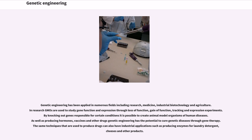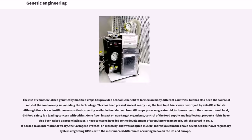The same techniques used to produce drugs can also have industrial applications such as producing enzymes for laundry detergent, cheeses, and other products. The rise of commercialized genetically modified crops has provided economic benefit to farmers in many different countries, but has also been the source of most of the controversy surrounding the technology. This has been present since its early use; the first field trials were destroyed by anti-GM activists. Although there is a scientific consensus that currently available food derived from GM crops poses no greater risk to human health than conventional food, GM food safety is a leading concern with critics. Gene flow, impact on non-target organisms, control of the food supply, and intellectual property rights have also been raised as potential issues.